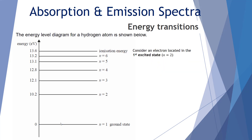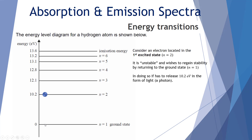Consider an electron located at the first excited state. This arrangement is quite unstable, and the electron will try to regain stability by returning back down to the ground state, n equals 1. Since energy can't be created or destroyed, in order to return to the ground state it has to give off that 10.2 electron volts in the form of light. A photon is emitted as it drops down, and that emitted photon has exactly the same energy as the difference between the two energy levels — 10.2 electron volts.